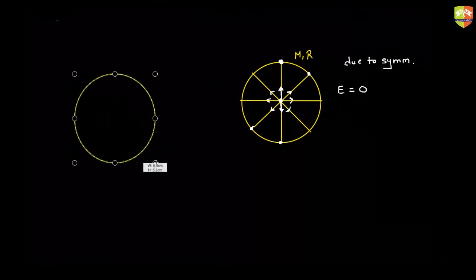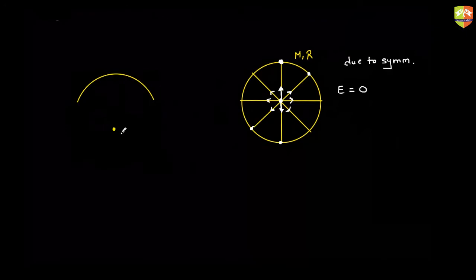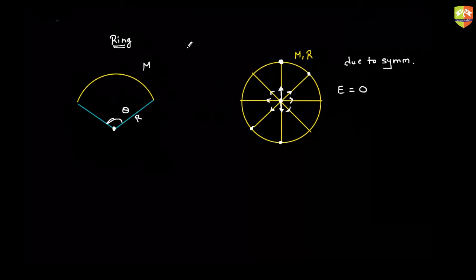Now try to find the field due to a sector of the circle. You have a center, radius R, and this angle is theta. Total mass is M. It's a circular arc — a sector of the circle means a circular arc which subtends angle theta at the center. Find the field at the center.